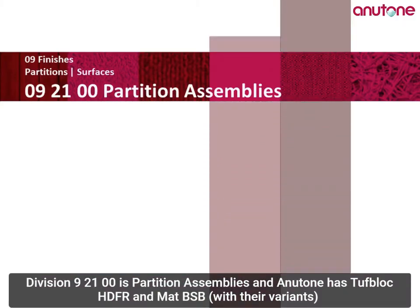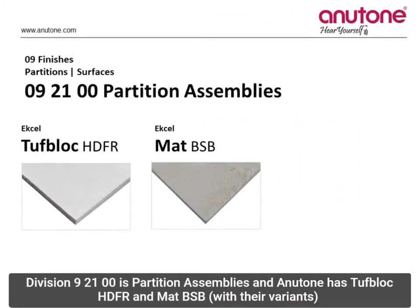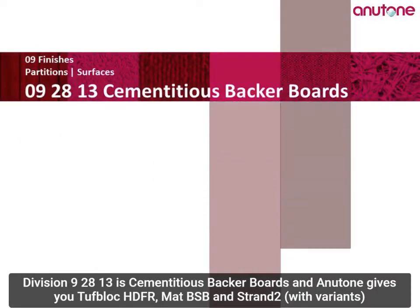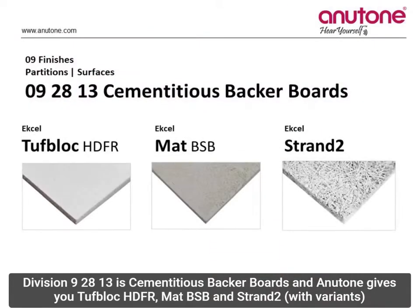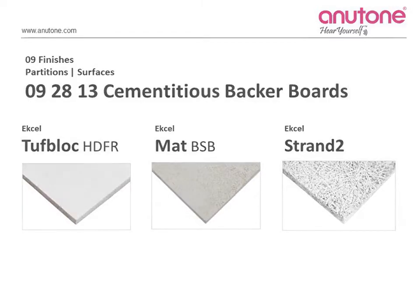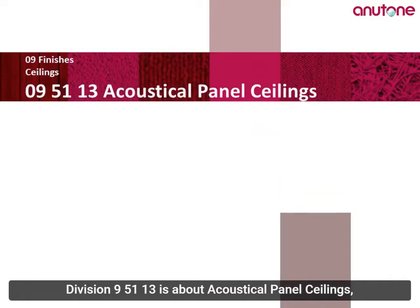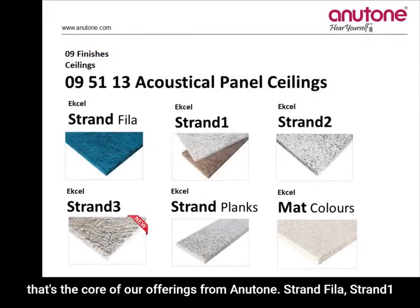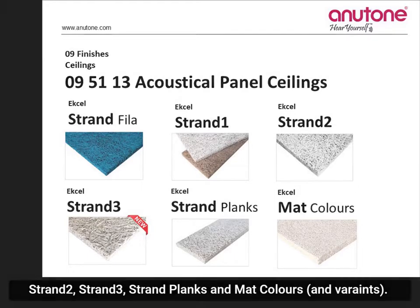Division 9, 2100 is Partition Assemblies — Anutone has Tub-Log HDFR and Matte BSB. Division 9, 2813 is Cementitious Backer Boards — Anutone gives you Tub-Log HDFR, Matte BSB, and Strand 2. Division 9, 5113 is about Acoustical Panel Ceilings — that's the code for our offerings: Monotone, Strand Phila, Strand 1, Strand 2, Strand 3, Strand Planks, and Matte Colors.